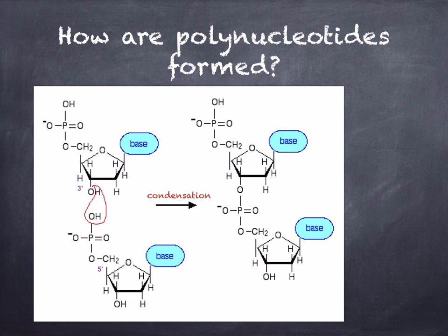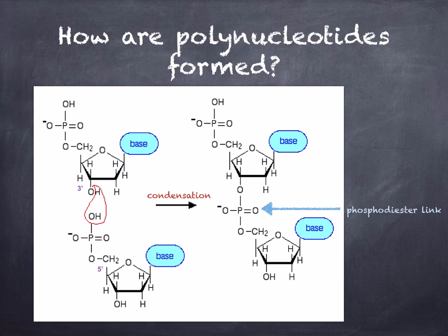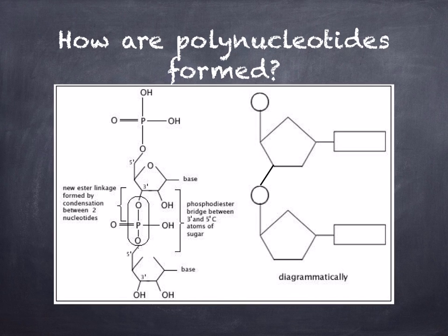Here you can see a condensation reaction — notice how water is being removed. This occurs between the 5' carbon of one unit and the 3' carbon of the next unit. The resulting bond is a covalent bond, which we call a phosphodiester link, or phosphodiester bridge.